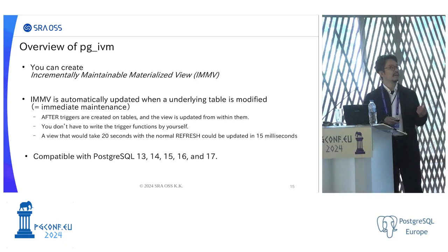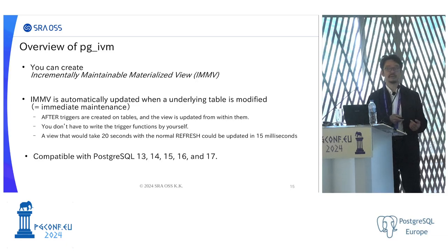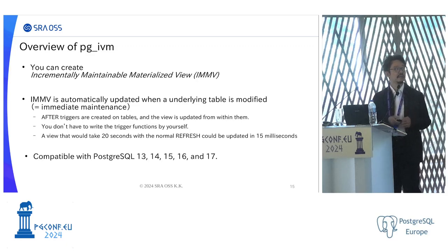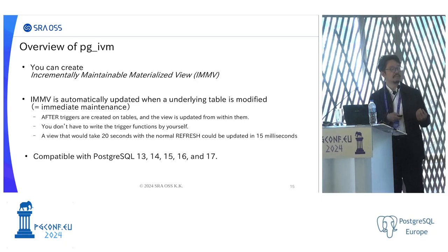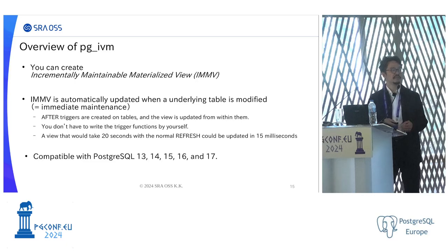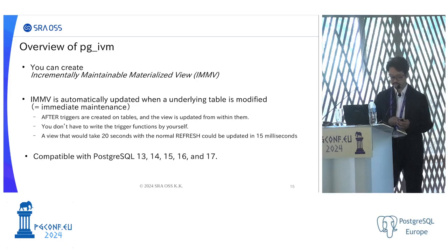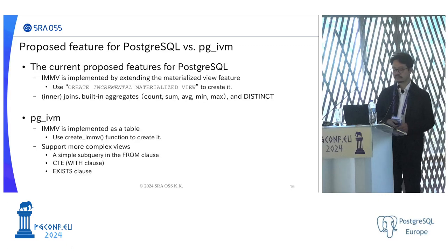Specifically, after-triggers are created on the base tables, and the view is updated from within these trigger functions. You don't have to write the trigger function by yourself. A view that would take 20 seconds to be refreshed can be updated in 50 milliseconds, for example, using this feature. PGIVM is currently compatible with PostgreSQL versions 13 to 17, the latest version.